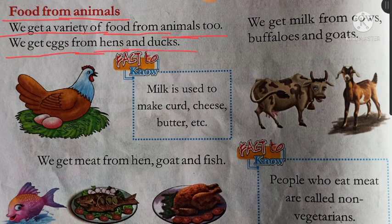We get eggs from hens and ducks. Egg means anda, hen — murgi, duck — battak. Hum log anda murgi aur battak se prapt karte hain. Ande to aap sabhi khaate honge.